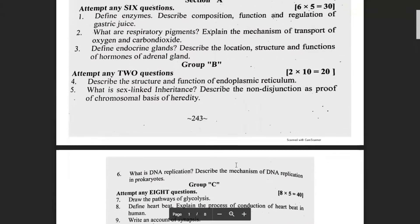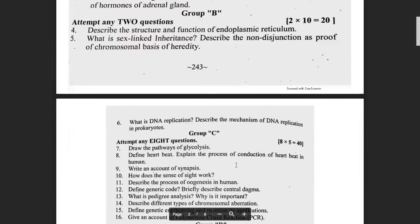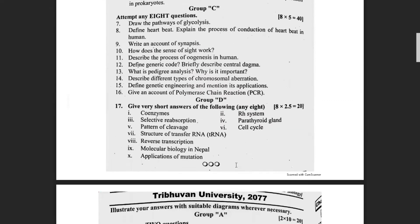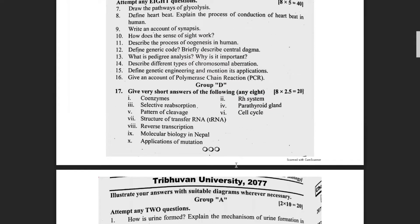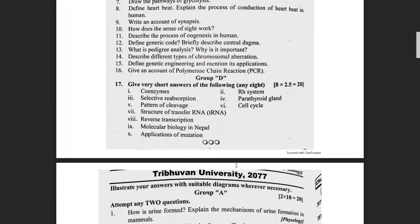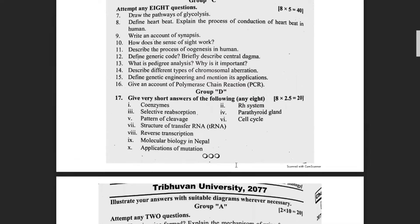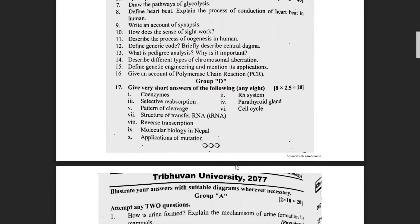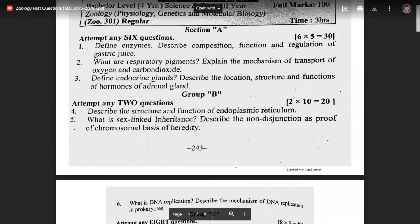Group A means 20 marks. Group B means 20 marks. Overall, group C carries 80 marks. Each question in group B carries 2.5 marks, so that is 20 marks in group B. Overall, we have 80 marks in group C, and group D carries 20 marks. So 80 plus 20 equals 100 marks in the total theory exam.